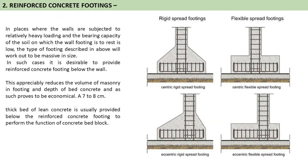Now discussing about reinforced concrete footings — as you can see in the picture, all the footings have different types of bases and the base is relatively bigger in both width and height. This kind of reinforced concrete is used when there is low bearing capacity of the soil and yet relatively heavy loading. In these cases it is desirable to provide a reinforced concrete footing below the wall. This appreciably reduces the volume of masonry in footing and depth of the bed concrete and proves to be economical. A 7–8 cm thick bed of lean concrete is usually provided below the reinforced concrete footing. The yellowish part in all the images is your concrete footing or the lean concrete bed.